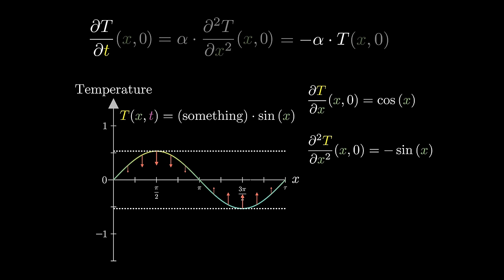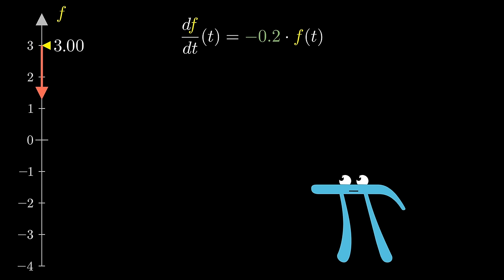So unlike other temperature distributions, sine waves are peculiar in that they'll get scaled down uniformly, looking like some constant times sine of x for all times t.